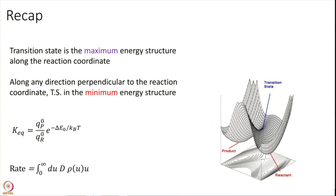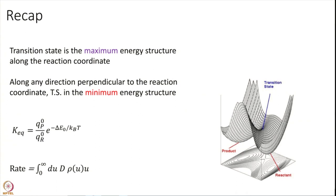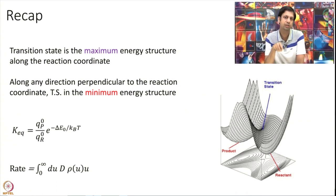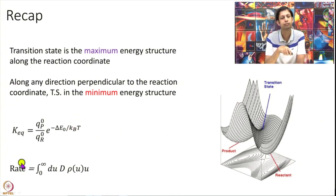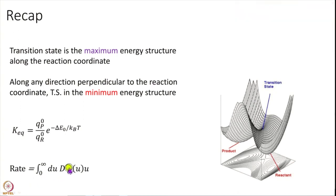We derived another very important expression a few modules ago for how we calculate the equilibrium constant: Q_P° and Q_R° are partition functions per unit volume, divided by Avogadro's number if you want molar units. And in the last module we derived that the rate is the integral over speeds of D (the overall density), times rho (the probability of having speed u), times u — the flux.